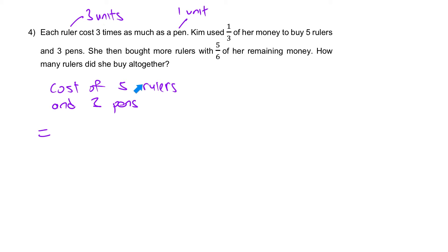In terms of units, one ruler costs three units. Five rulers will be five times three units, right? Plus, one pen costs one unit, so three pens equals three units.